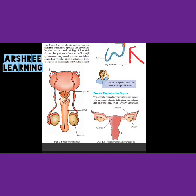These sperms have to combine with a female reproductive cell. The second part shown in your book is the female reproductive system, which shows the female reproductive organs.